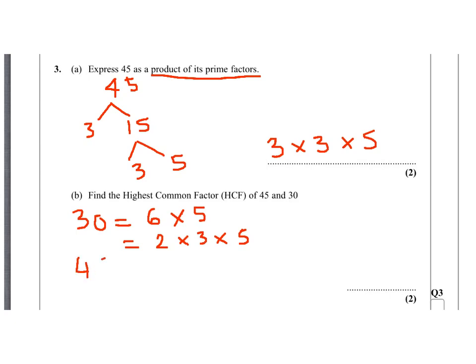And 45, as we did in the previous question, is 3 times 3 times 5. Now the highest common factor, as you can see, is 3 times 5, which is 15.